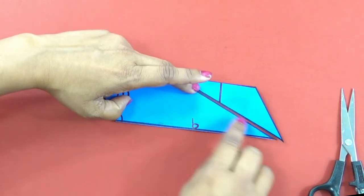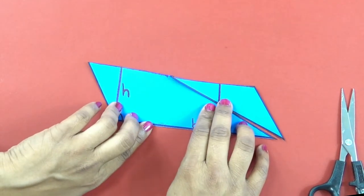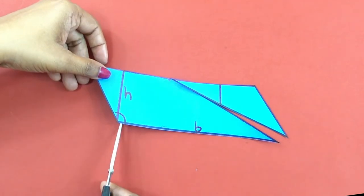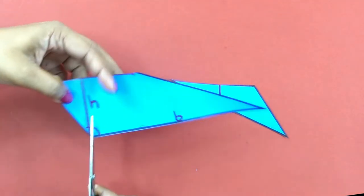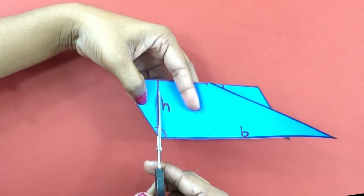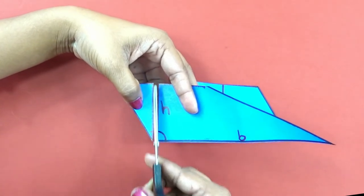So we got a sort of parallelogram. What should I do next? Let me cut this point.